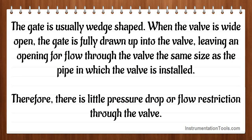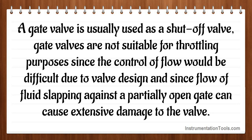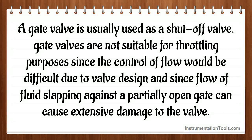The gate is usually wedge-shaped. When the valve is wide open, the gate is fully drawn up into the valve, leaving an opening for flow through the valve the same size as the pipe in which the valve is installed. Therefore, there is little pressure drop or flow restriction through the valve. A gate valve is usually used as a shut-off valve. Gate valves are not suitable for throttling purposes since the control of flow would be difficult due to valve design and since flow of fluid slapping against a partially open gate can cause extensive damage to the valve.